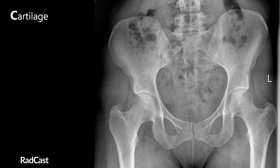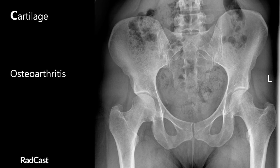Next in our ABC mnemonic is cartilage. There are three cartilage-containing joints to assess: the acetabular joint present on both sides, the sacroiliac joint where the sacrum attaches to the ilium also present on both sides, and the single pubic symphysis which is the joining between the two pubis bones. While inspecting these we're looking for any signs of arthritis or dislocation.